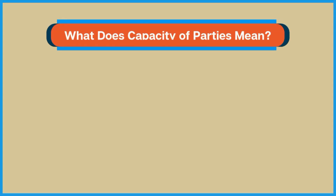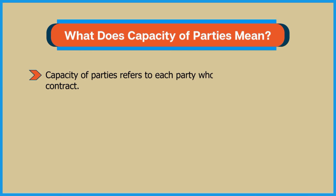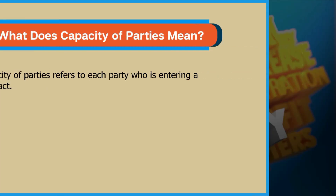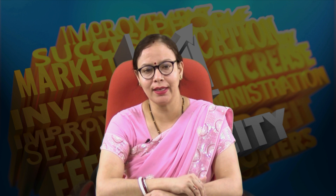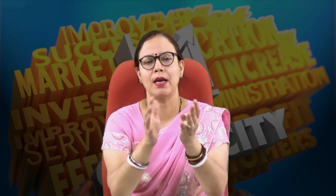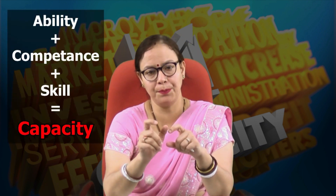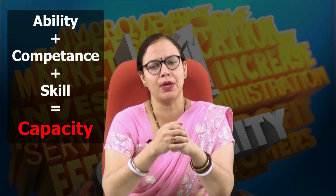Capacity of party refers to each party who is going to enter into a contract. That capacity reflects the ability, competence, and skill of the parties. Lawfully, we are considering competence. So ability plus competence plus skill is equal to capacity.